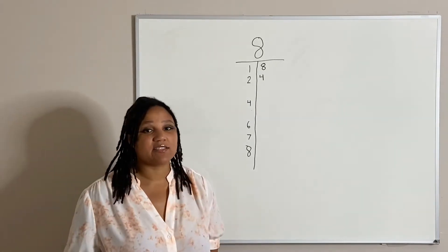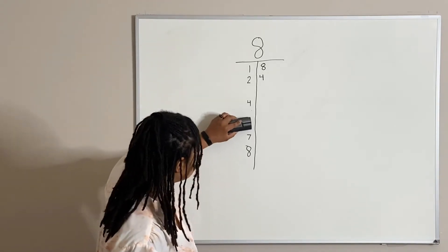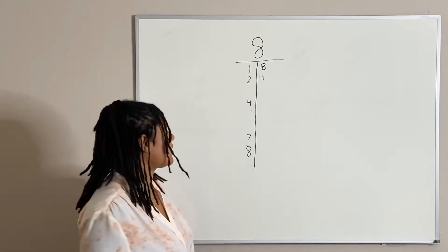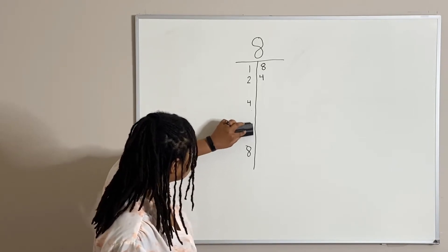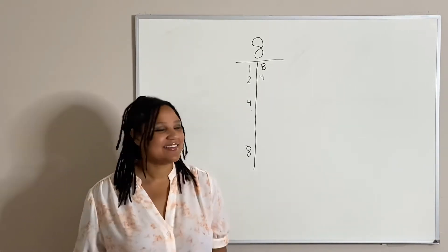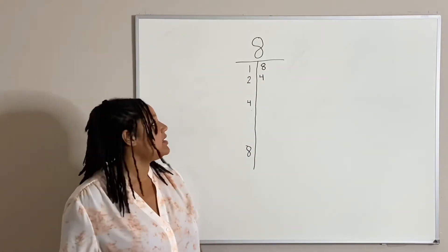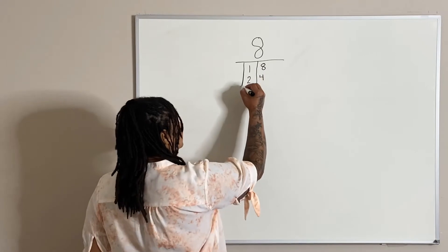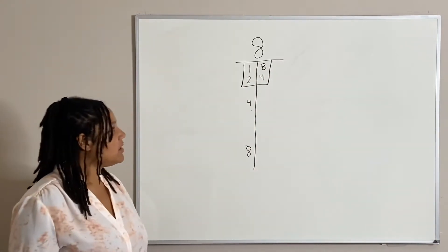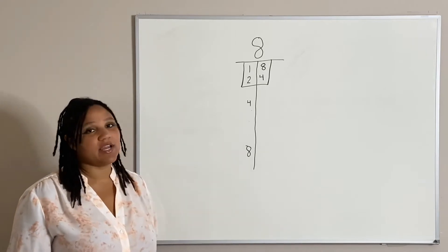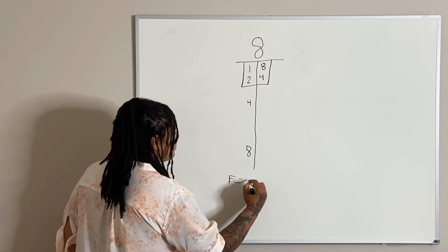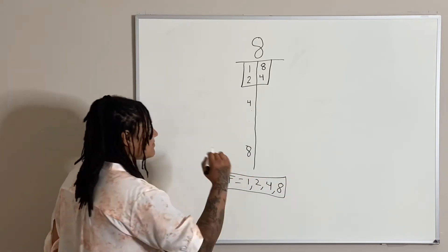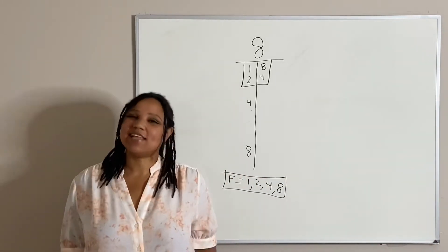What about the number six? No, six doesn't work either, so I'm going to go ahead and erase the six. What about seven? Seven doesn't work, so I'm going to erase the seven. What about the number eight? Yes, we said eight works — eight times one is eight. So we see that four and eight only repeat themselves. The only things we need to be concerned with are one, two, four, and eight. So our factors are one, two, four, and eight. Not so bad, right?